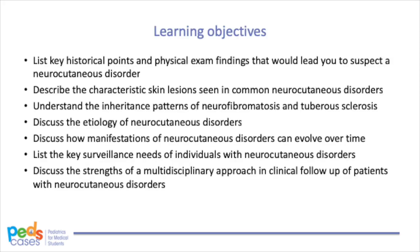The objectives of this PedsCase are: list key historical points and physical exam findings that would lead you to suspect a neurocutaneous disorder; describe the characteristic skin lesions seen in common neurocutaneous disorders; understand inheritance patterns of neurofibromatosis and tuberous sclerosis; discuss the etiology of neurocutaneous disorders; discuss how manifestations can evolve over time; list key surveillance needs; and discuss the strength of a multidisciplinary approach in clinical follow-up.